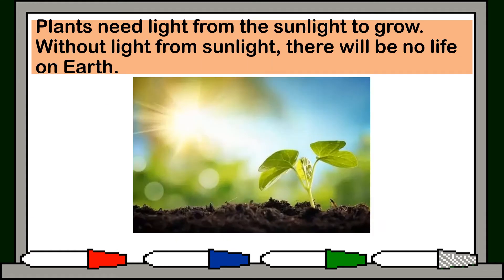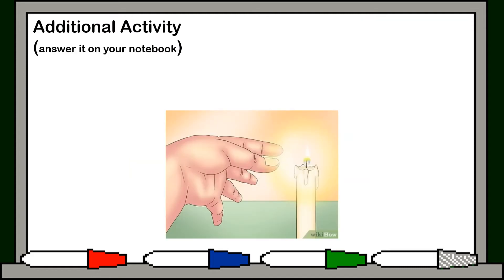So light energy allows people to see things, right? Plants need sunlight to grow. Without the light from the sun, there will be no life on earth. Okay, for additional activity, answer it on your notebook.